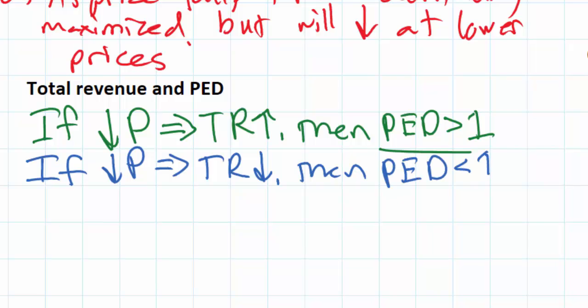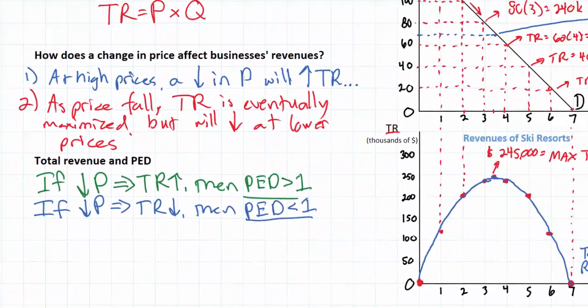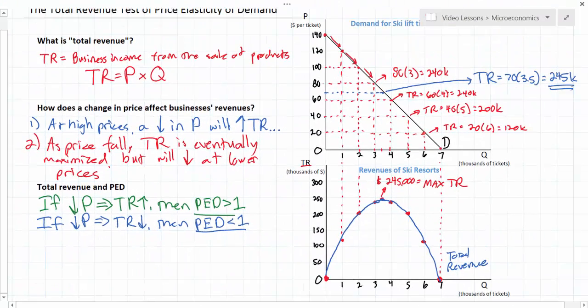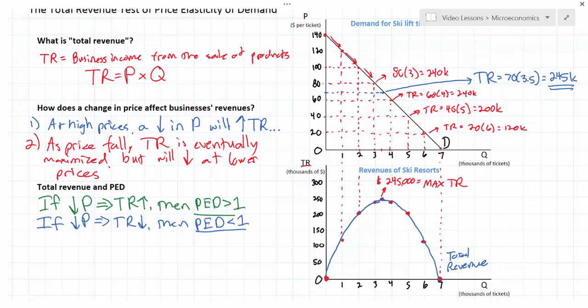Now what's the explanation for that? Well, the increase in quantity demanded will be proportionally smaller than the decrease in price. So in this case, a 10% decrease in price might only lead to, let's say, a 5% increase in quantity demanded. Consumers are relatively unresponsive to price changes, therefore price decreases will not cause total revenues to rise.